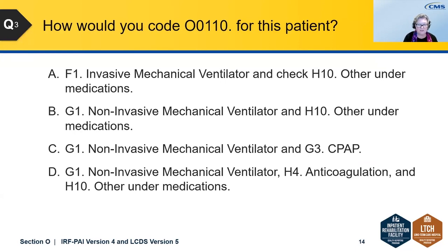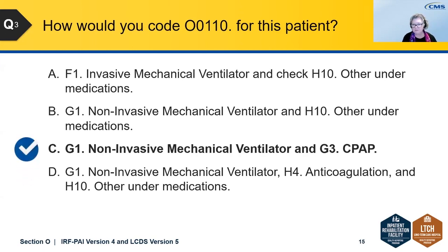How would you code O0110 for this patient? Is it A: F1 invasive mechanical ventilator and H10 other under medications? Or C: G1 and G3 CPAP, or G1, H4 anticoagulation, and H10 other? Most of you went between C and D, but the majority — 63% — answered C, which is the correct answer.